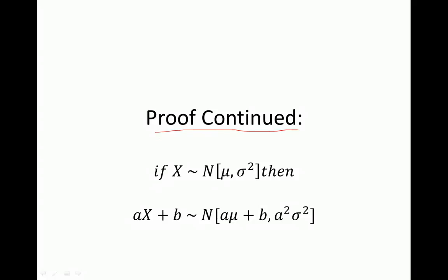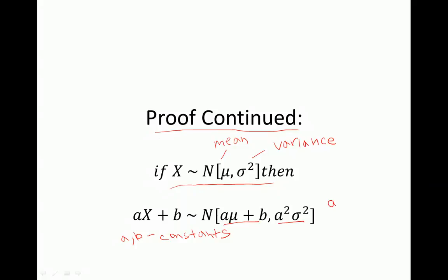The proof in the previous video was that if we have x, a normally distributed random variable with mean mu and variance sigma squared, then a linear transformation of this variable — a times x plus b where a and b are constants — is also normally distributed with mean a times mu plus b and variance a squared times sigma squared. I'm talking about a situation here where a and b are negative, so they're less than zero.